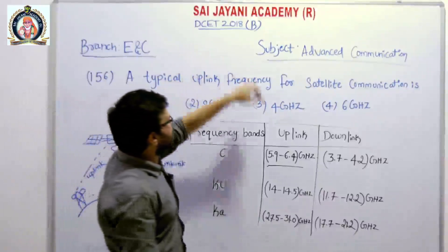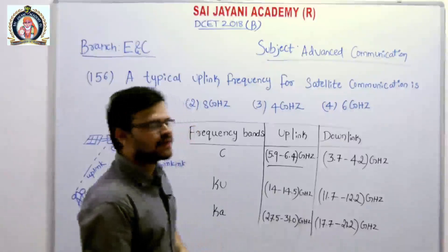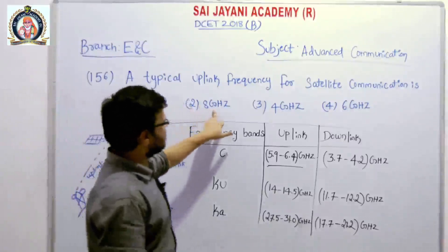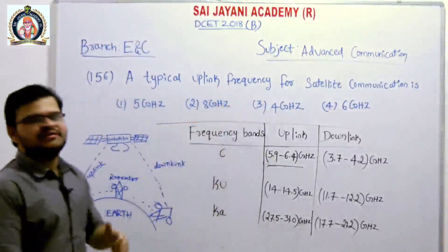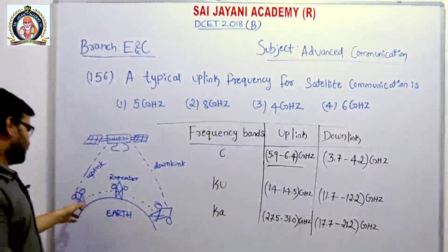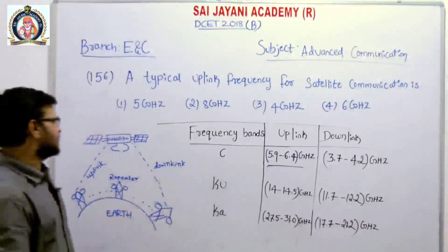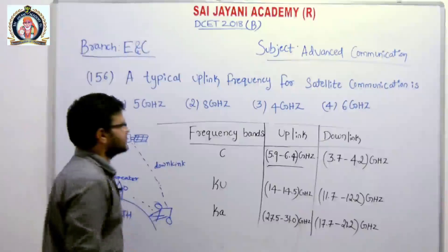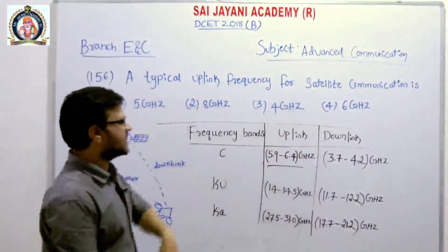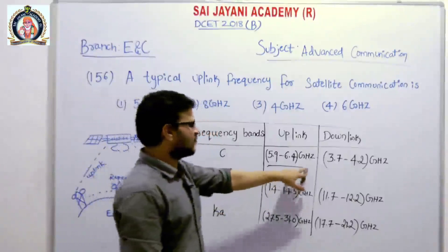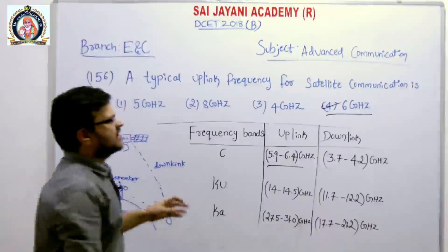For the same DCT 2018 B series, question number 156: A typical uplink frequency for satellite communication is — options: 5 GHz, 8 GHz, 4 GHz, or 6 GHz. The uplink frequency is the frequency used to transmit signals from the earth transmitting station to the satellite. The most commonly used band for satellite communication is C-band, with an uplink frequency of 5.9 to 6.4 GHz. So the correct answer is 6 GHz.